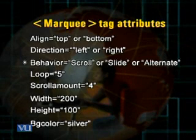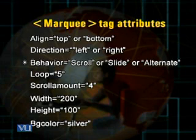'Behavior' is another attribute with three possible values: 'slide', 'scroll', and 'alternate'. If the behavior value is 'slide', the text scrolls just once from right to left and then stops. By default the value is 'scroll', meaning the text keeps scrolling continuously. If the value is 'alternate', the scrolling text moves between two extreme ends — it comes from the right, stops at the left end, then goes back from left to right, keeping changing direction in a loop.